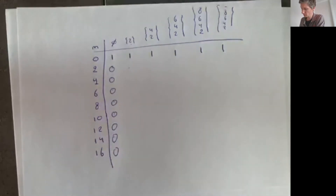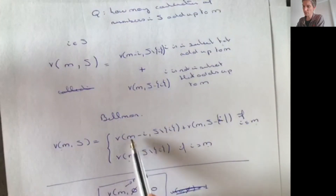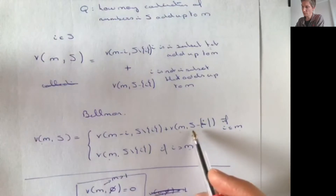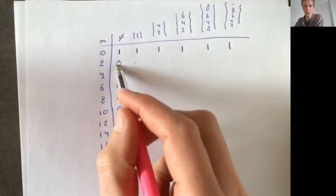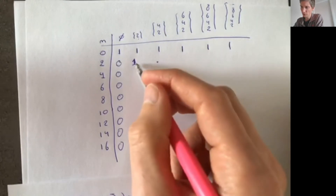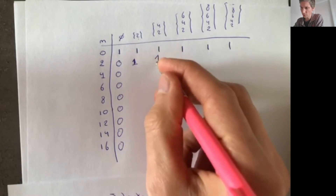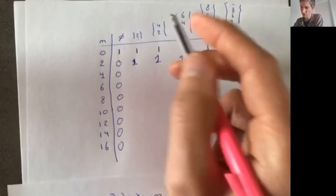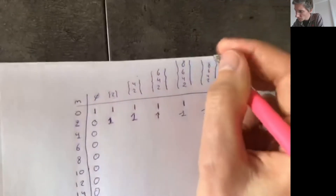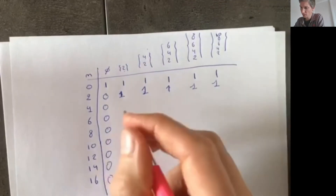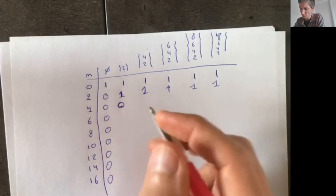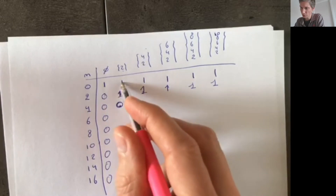This gives us the Bellman recursion: V(m, S) = V(m−i, S\{i}) + V(m, S\{i}), and this applies when i ≤ m. If i is bigger than m, then V(m, S) = V(m, S\{i}), because you cannot have a subset that adds up to m and includes i. So we distinguish two cases: if i is smaller than m, you take subsets not including i that add up to m, plus subsets not including i that add up to m−i.